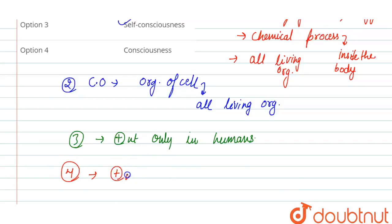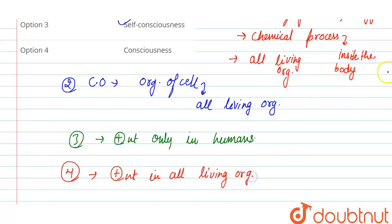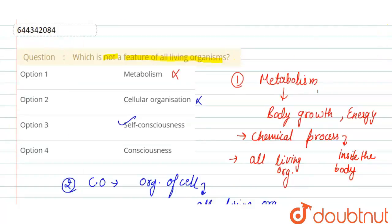The fourth option is consciousness. Consciousness is present in all living organisms, so this is not the answer. Therefore, the correct answer for the question 'which is not a feature of all living organisms' is self-consciousness.